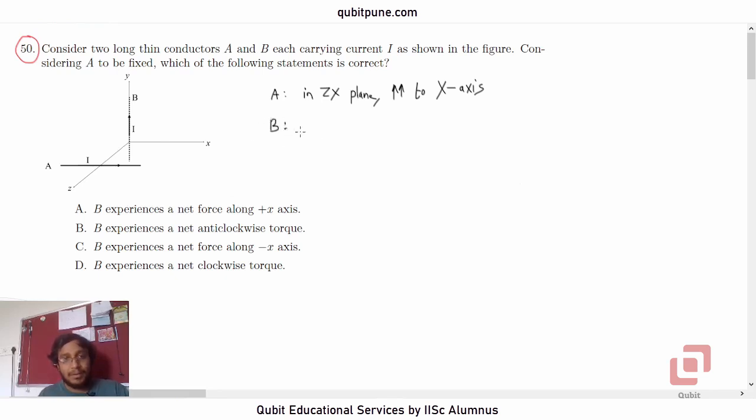Where is conductor B? Conductor B is along y-axis, conductor B is along y-axis.